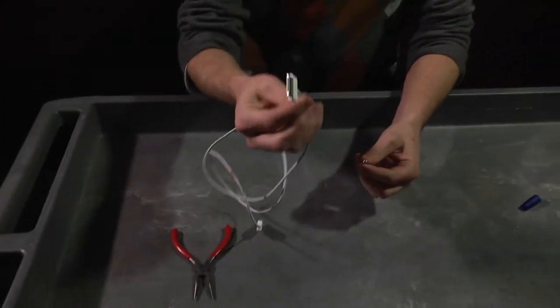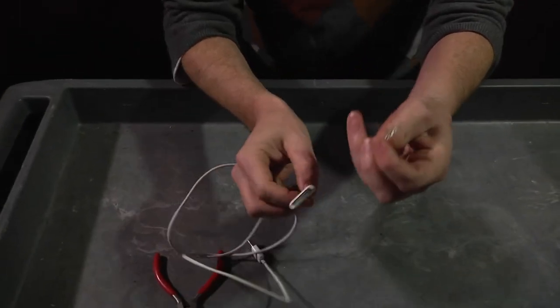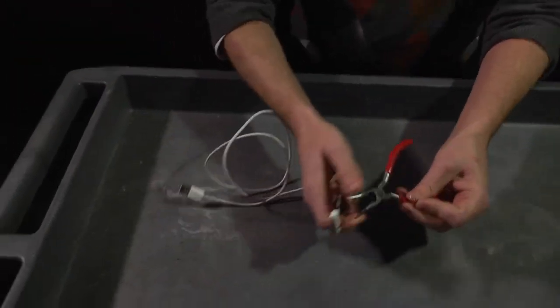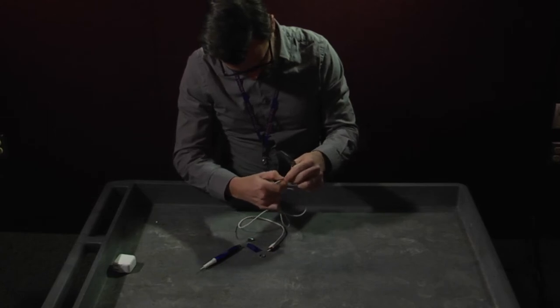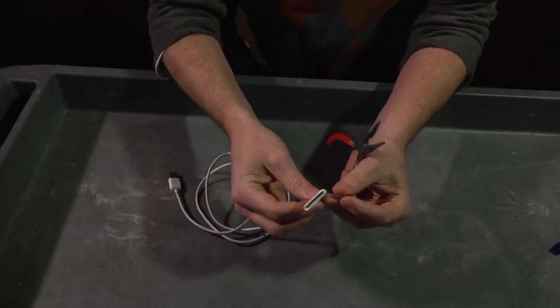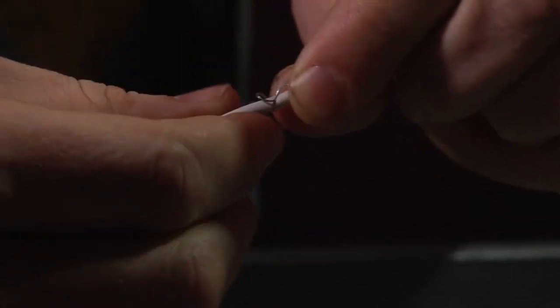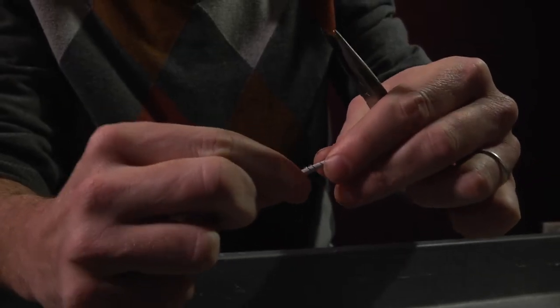Take your charger cable and your spring, and with your needle nose pliers you're going to wind the spring around the end of your connector. This is going to create a DIY strain release on the cable to prevent that fraying and cracking that always tends to happen with these cables.